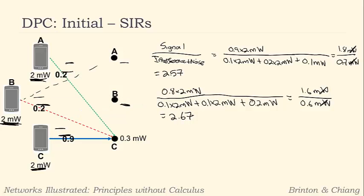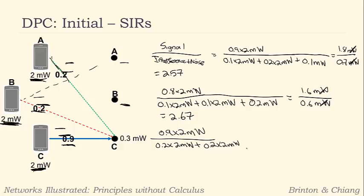We do the same for C. The signal is 0.9 times 2 milliwatts. Interference from A is 0.2 times 2, plus from B is 0.2 times 2, plus the noise at C is 0.3 milliwatts — the highest noise of any receiver. This gives 1.8 milliwatts divided by 1.1 milliwatts, and the SIR for C is 1.64.